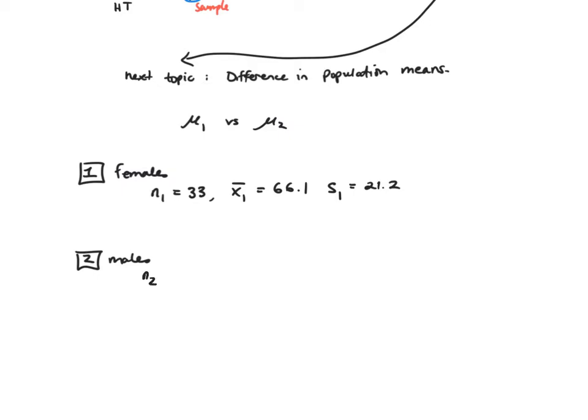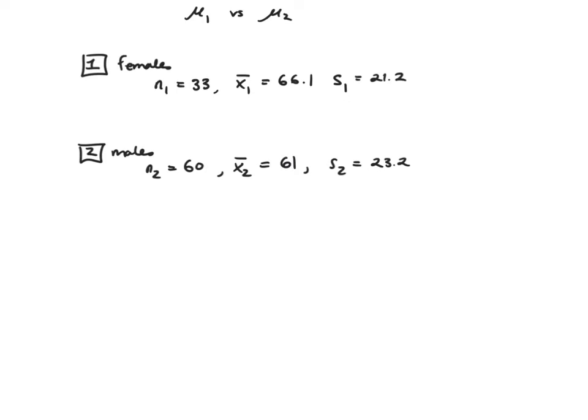Moving on to the males: N2 was 60 males in the class. Their average was a bit lower at 61, and the standard deviation was quite similar at 23.2. With this data, what I want to do is start looking for ways to compare these two populations, and the first thing I'm going to do is build a confidence interval for the difference between these two means.